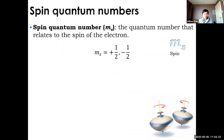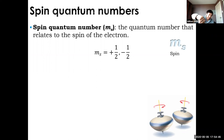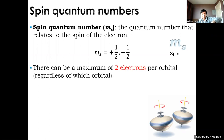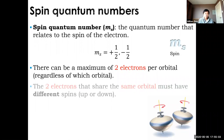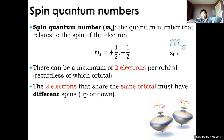Finally, the spin quantum number MS is very simple. It refers to the direction of the magnetic field generated by the spinning electron — either up or down. If pointing up, MS equals plus one-half; if pointing down, MS equals minus one-half. Those are the only two values. Because each orbital has a maximum of two electrons, those two electrons must have opposite spins — one up and one down. You can't have two ups or two downs; they must be different.